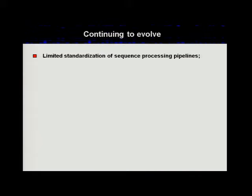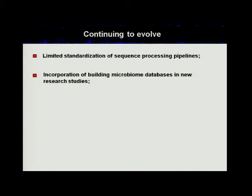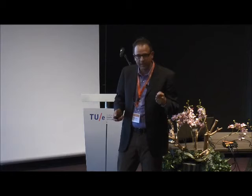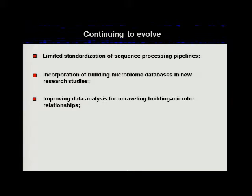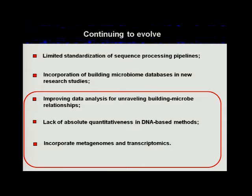To evolve further, there are a few things we need to do. We need to get our bioinformatics situation more developed — it's much more developed than it used to be, with thousands of people using these mechanisms for environmental and medical investigations — but getting pipelines squared away and more standardized, using databases and microbiomes for buildings, I think is important right now, and important for industry as well. Improving data analysis and unraveling the microbe-building relationship in a more deterministic rather than statistical fashion is quite important. Getting absolute quantitativeness in our measurements versus relative abundances is also going to be very important, and incorporating molecular techniques in addition to sequencing amplicons — producing metagenomes, looking at transcriptomics.